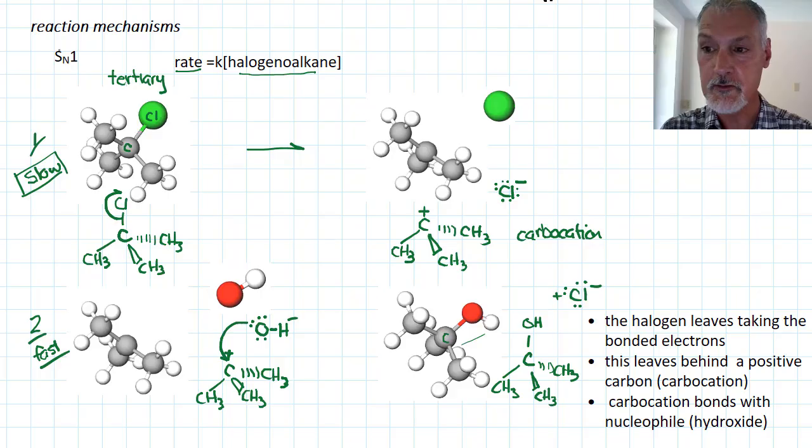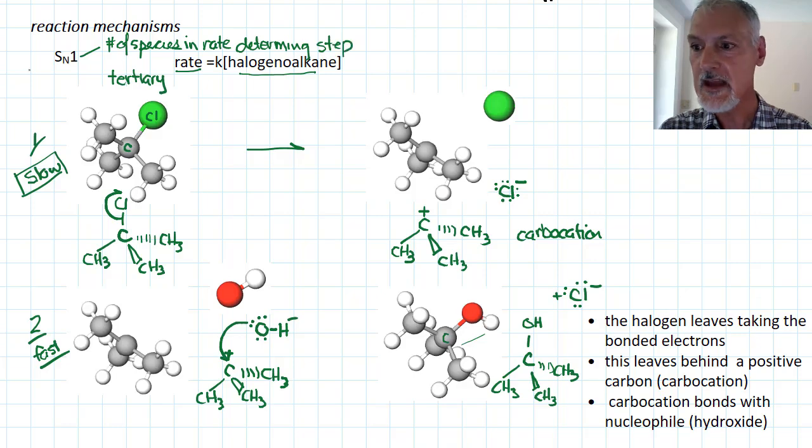This notation for the mechanism is used to designate this type of procedure. The 1 here refers to the number of species in the slowest step, or in the rate-determining step. S stands for substitution and N, nucleophilic. So tertiary halogenoalkanes tend to undergo this SN1 substitution.